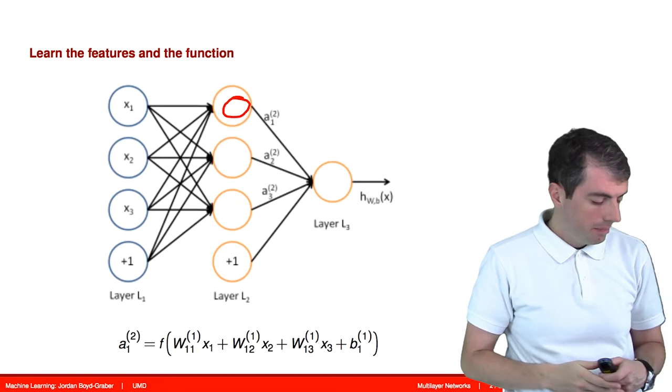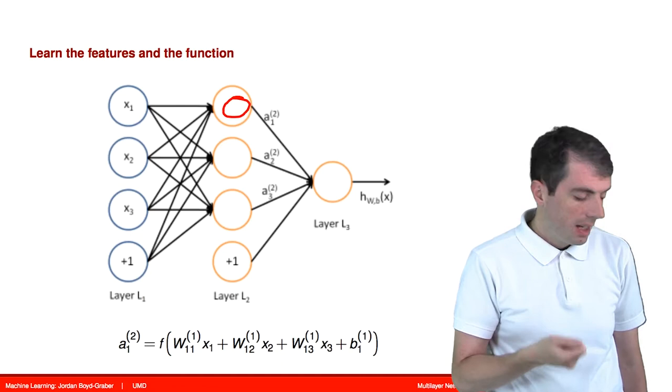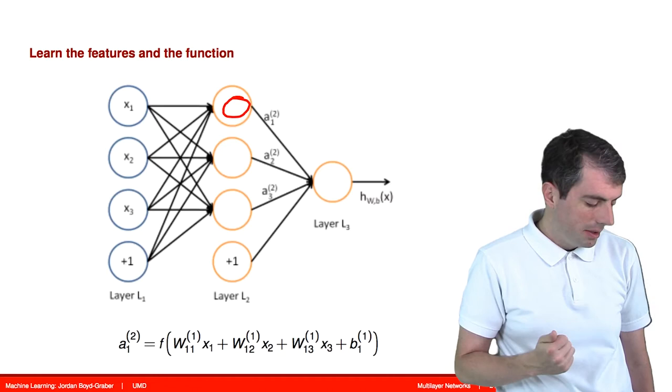Let's take a look at the formula for one hidden node in this hidden layer. This node is computed from all of the inputs, x1 all the way to x3 in this example.